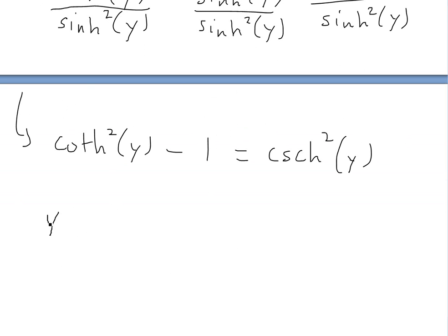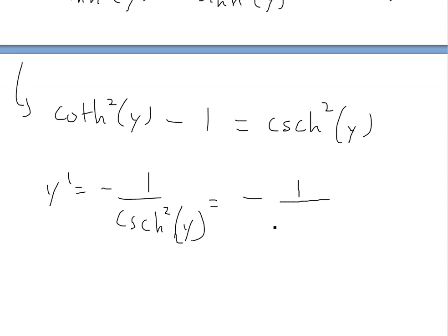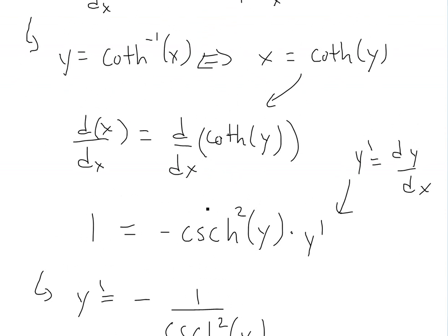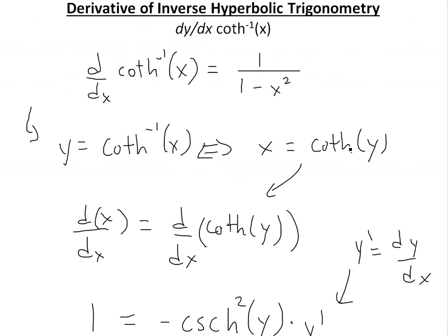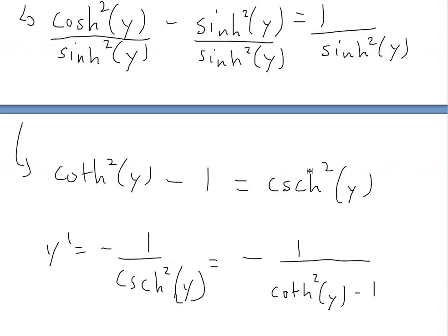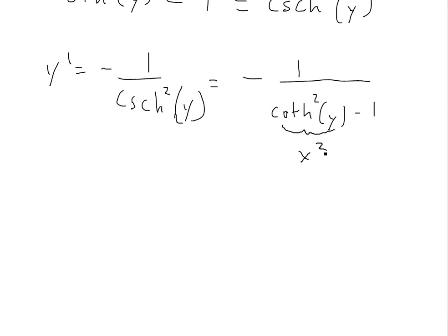So y prime equals negative 1 over hyperbolic cosecant squared of y. We plug in the identity, replacing csch²(y) with coth²(y) − 1, giving us negative 1 over hyperbolic cotangent squared of y minus 1. From the beginning of our proof, we know x equals hyperbolic cotangent of y, so cotangent squared of y is just x squared. That gives us y prime equals negative 1 over x squared minus 1.